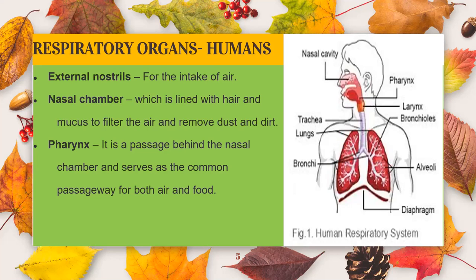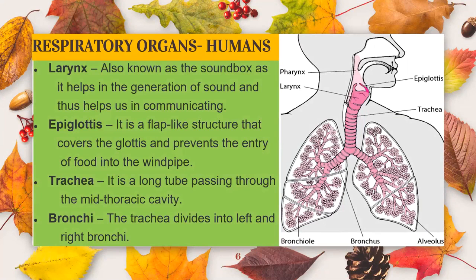The nasal chambers open up into a wide hollow space termed as the pharynx. It is a common part for both air and food. The larynx is situated at the junction of the pharynx and windpipe, also termed as Adam's apple. It is also called the voice box as it helps in the generation of sound and thus helps us in communicating. The epiglottis is a flap-like structure that covers the glottis, which is the opening of the larynx, and prevents the entry of food into the windpipe.